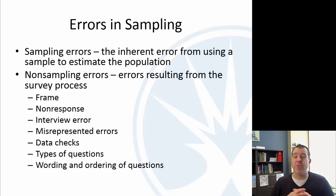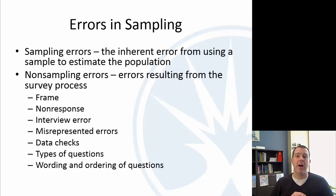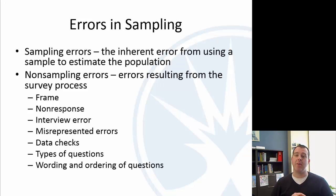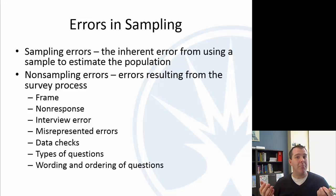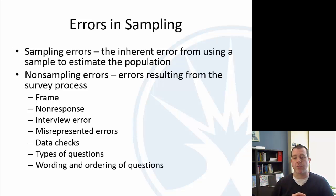Non-response is very common in surveys. We did a survey of the faculty — we have a faculty union here — and we got a 26% response rate. So what happened to the other 74%? What does that mean, and how does that affect our results? Those are really important questions.